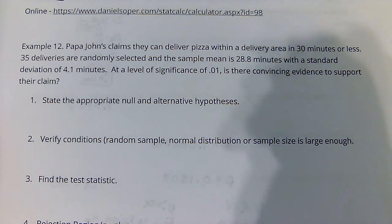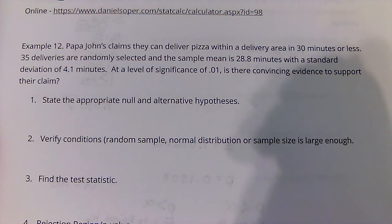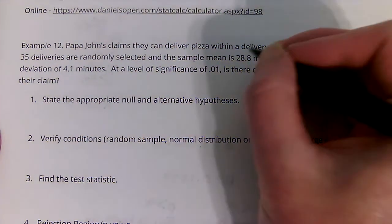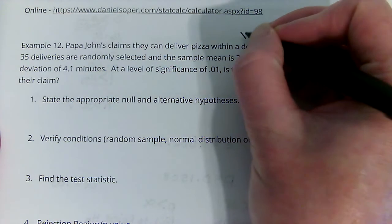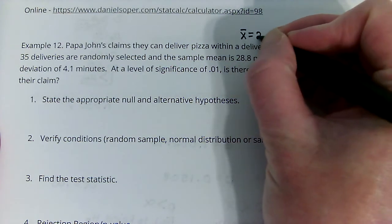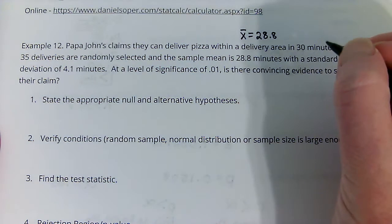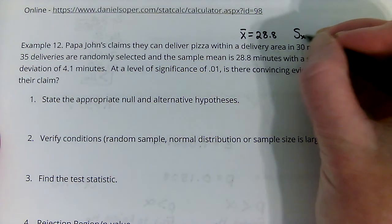Papa John's claims that they can deliver pizza within a delivery area in 30 minutes or less. Thirty-five deliveries are randomly selected, and the sample mean is 28.8. So that's our x-bar with a standard deviation of 4.1. So they're saying that's coming from the sample.